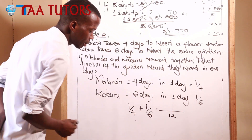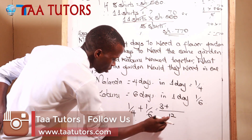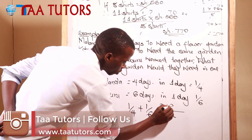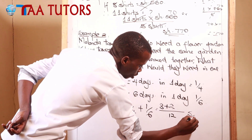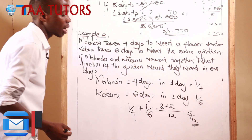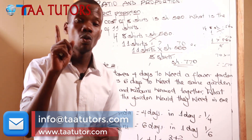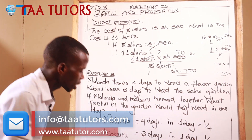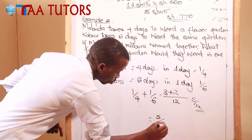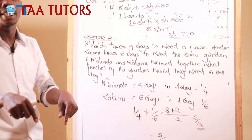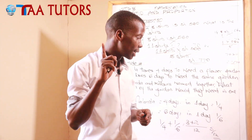4 goes into 12 three times, giving 3. 6 goes into 12 two times, giving 2. Adding 3 plus 2 gives 5 all over 12. So 5 over 12 is the fraction of the garden that Malanda and Kaburu will weed together in one day. That is our final answer: 5/12.